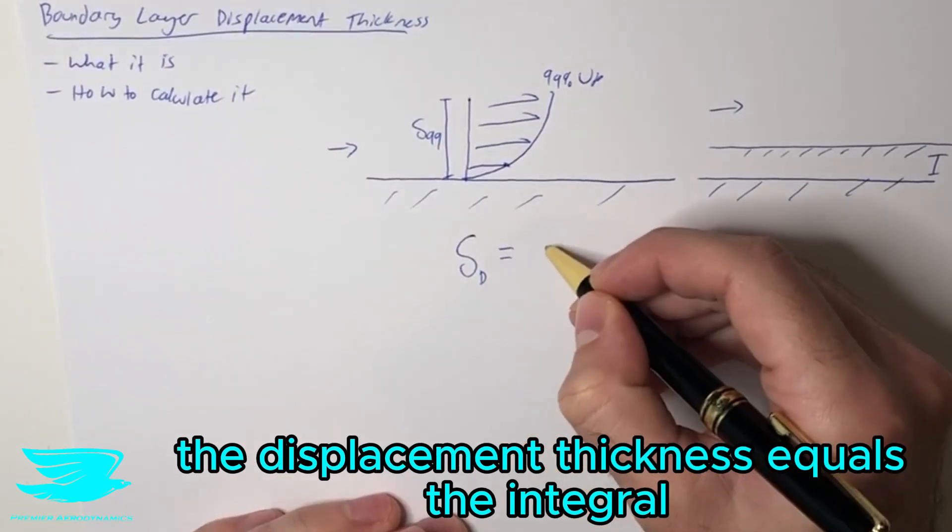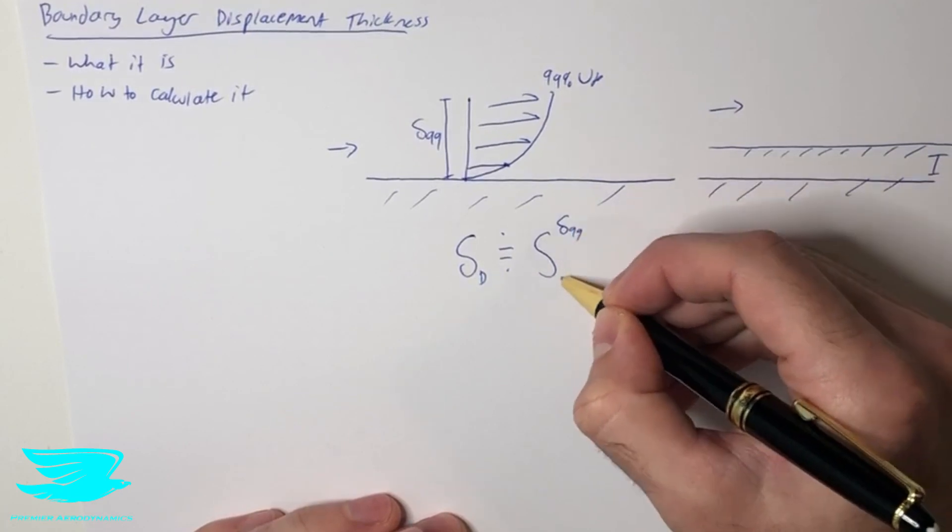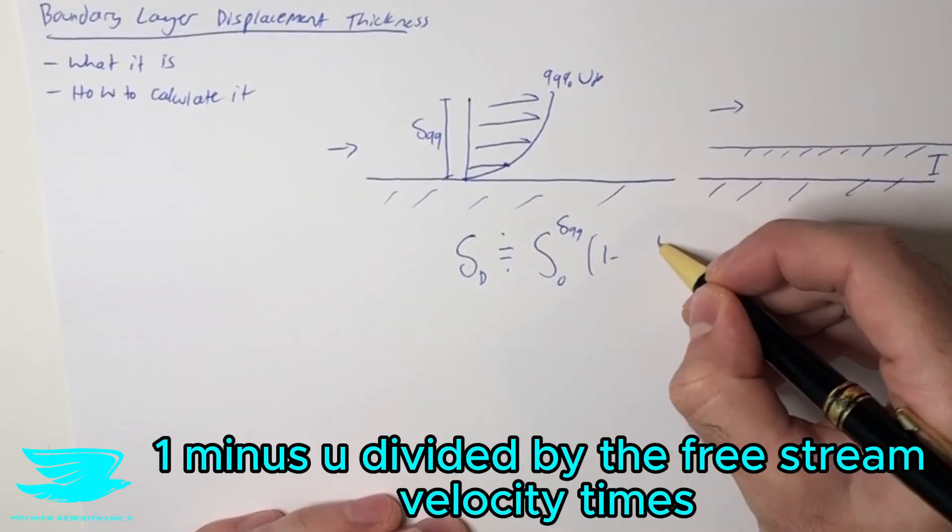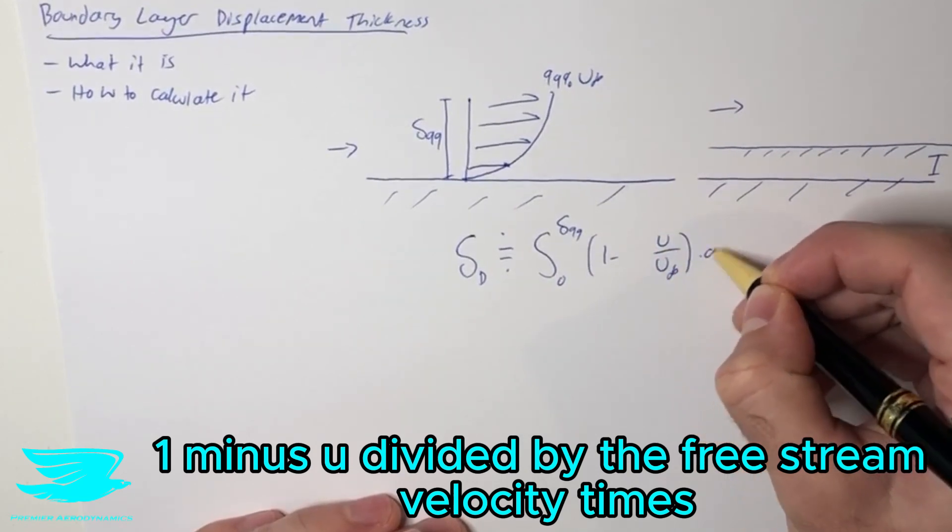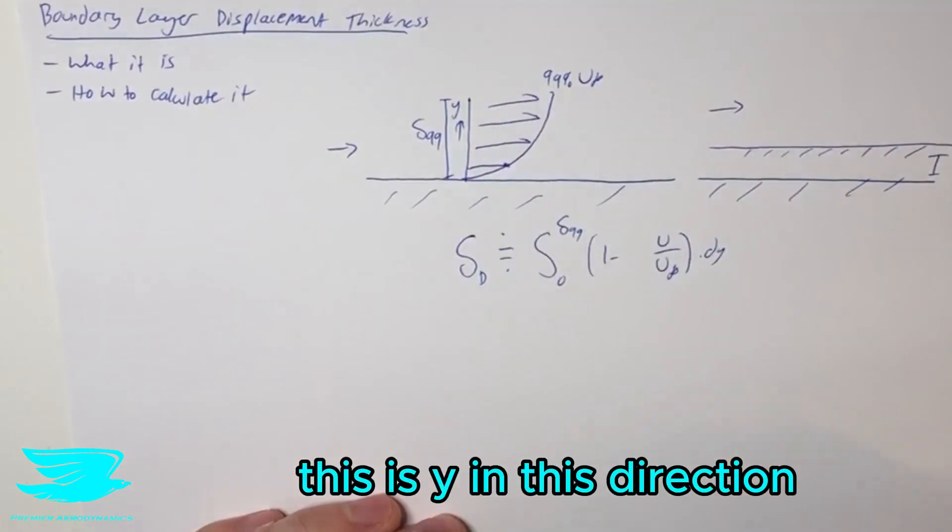the displacement thickness equals the integral, approximately the integral from zero to the height of the boundary layer of one minus u divided by the freestream velocity times delta y. And this is delta y, sorry, this is y going this direction.